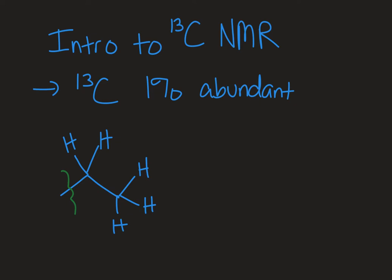About 1% of carbon is carbon-13. It's NMR active due to its odd mass number. What that means is it can couple to protons that are on it and also protons that are next door to it. What that leads to is a very complex spectrum.